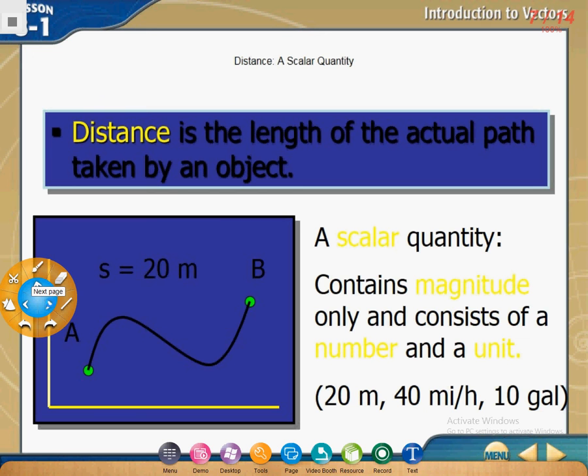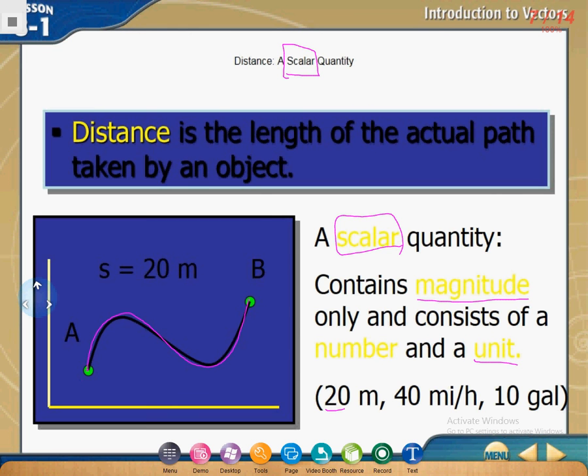Let's see the difference between the scalar quantity and vector. We will start with the scalar, like a distance. The definition of the distance is the length of the actual path taking through the objects. I want you to look carefully. If we put your hand here on A, go through the line, this we call it distance. We can find the length of this distance, but no direction. The scalar quantity contains magnitude, which is the length, without direction. We can have a unit, like, for example, 20 meters, 40 miles per hour, 10 gallons. These are units. We will use them to find distance or any quantity, but without direction.